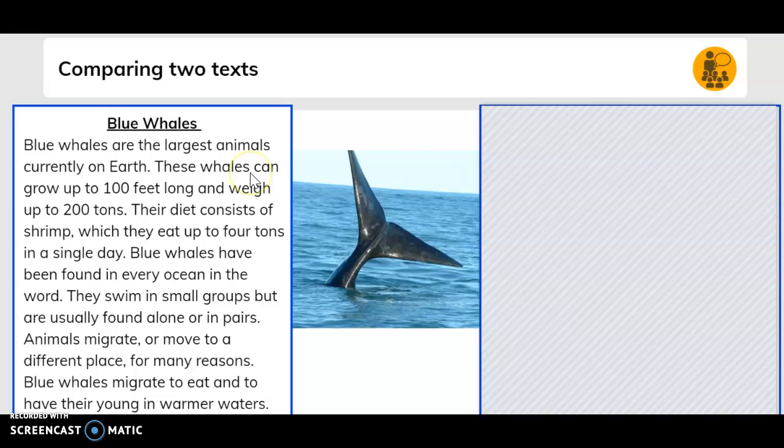Comparing two texts. Blue whales are the largest animals currently on Earth. These whales can grow up to 100 feet long and weigh up to 200 tons. Their diet consists of shrimp, which they eat up to four tons in a single day.